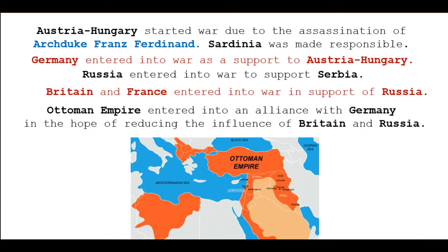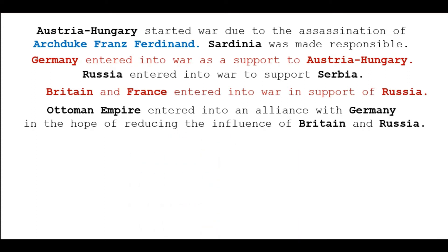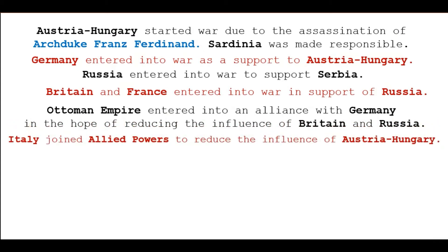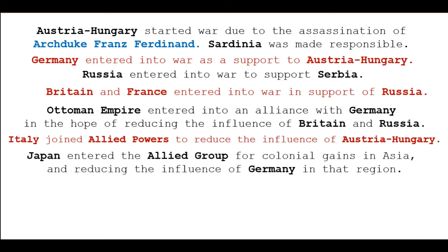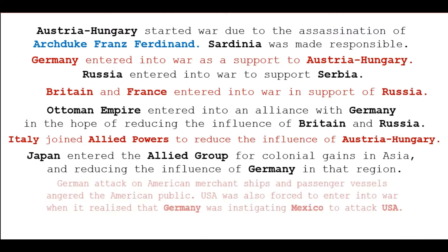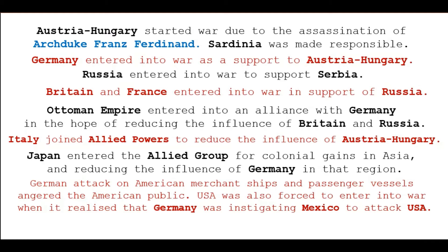Britain and Russia wanted to increase their influence in the Ottoman region. Italy joined the Allied powers to reduce the influence of Austria-Hungary. Japan entered the Allied group for colonial gains in Asia and to reduce German influence in that region. Initially, the United States of America did not want to be a part of the war, but Germany's actions forced the US to join the Allied side. German attacks on American merchant ships and passenger vessels angered the American public. The USA was also forced to enter the war when it realized that Germany was instigating Mexico to attack the USA.